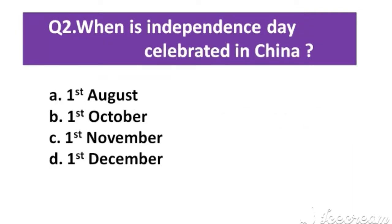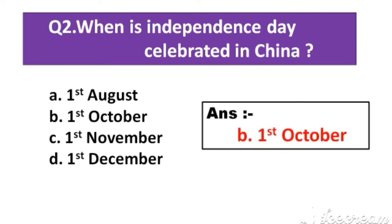Question number 2: When is Independence Day celebrated in China? Option A: 1st August. Option B: 1st October. Option C: 1st November. Option D: 1st December. The right answer is Option B: 1st October.